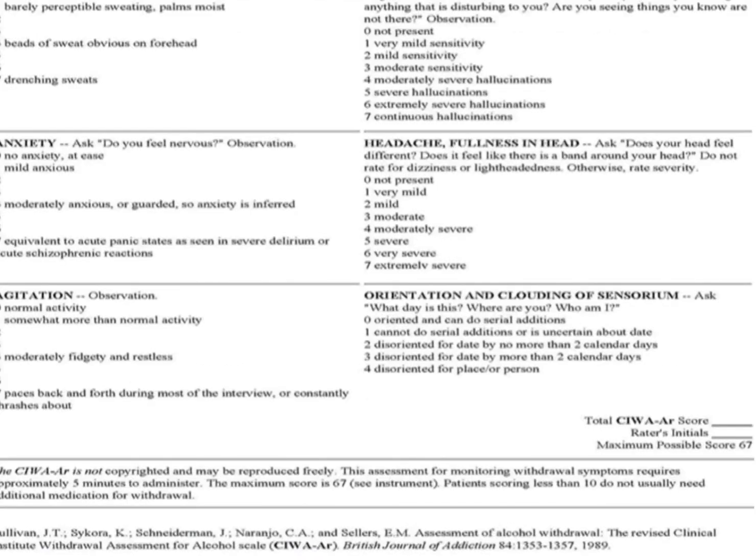For paroxysmal sweats: no sweat visible is 0 points. Barely perceptible sweating with palms moist is 1 point. Beads of sweat obvious on forehead is 4 points. And drenching sweats is 7 points.